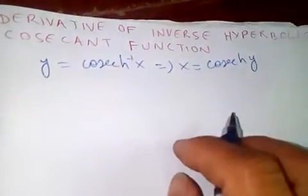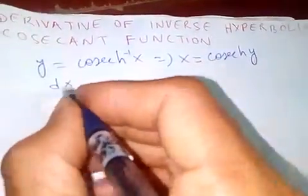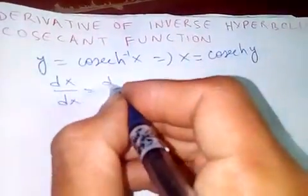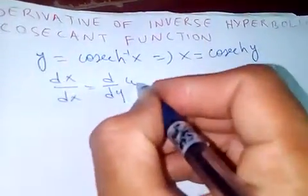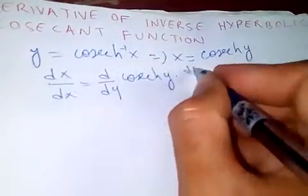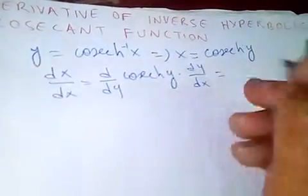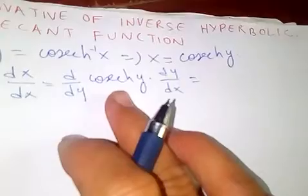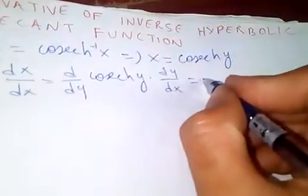Now taking derivative with respect to x and applying the chain rule, it will be d/dy of cosecant hyperbolic of y times dy/dx. And we know the derivative of cosecant hyperbolic of y is minus...